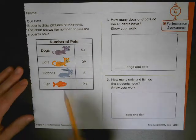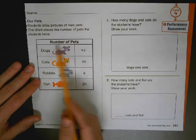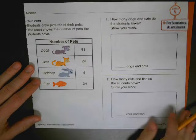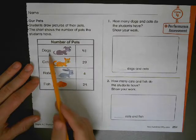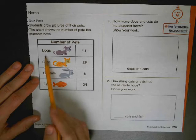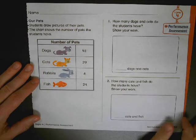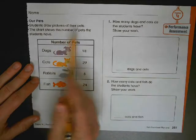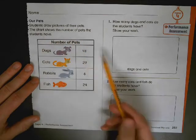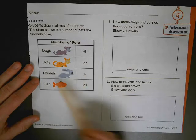It's a good idea to first read the title on the table: number of pets. Clearly we have these four animals, which hopefully you're reading along with me: dogs, cats, rabbits, fish. Students drew pictures of their pets, and the chart shows the number of pets they have.